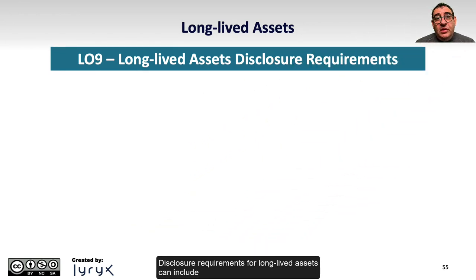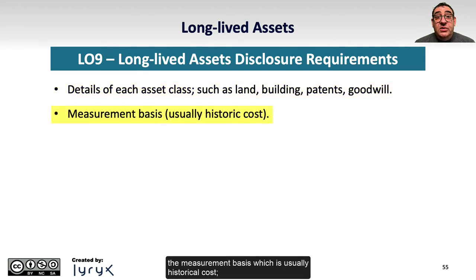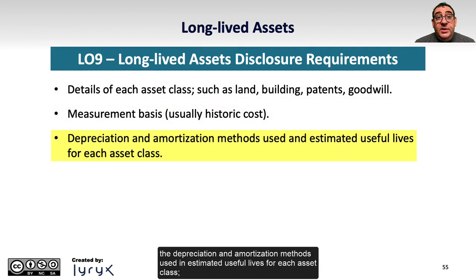Disclosure requirements for long-lived assets can include the details of each asset class, such as land, building, patents, and goodwill; the measurement basis, which is usually historical cost; and the depreciation and amortization methods used and estimated useful lives for each asset class.